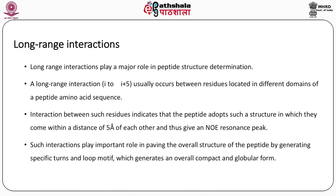Long-range interactions — as we go to larger peptides, they are very important. A long-range interaction is described as i to ≥ i+5, meaning there should be a gap of at least 5 amino acids to observe the NOE between any two protons. Such interactions usually occur between residues located in different domains of a peptide amino acid sequence, indicating that the peptide adopts a structure in which they come within 5 Å of each other and thus give an NOE resonance peak. Such interactions play an important role in defining the overall structure of the peptide by generating specific turns and loop motifs which generate an overall compact and globular form.